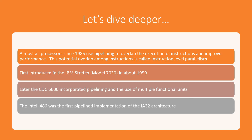From 1985, pipelining was the major concept processor makers used to overlap the execution of instructions and improve performance. The potential overlap among instructions is referred to as instruction level parallelism. Pipelining was first introduced in the IBM Stretch 7030 in 1959, and later the CDC 6600 incorporated pipelining with multiple functional units.